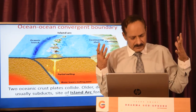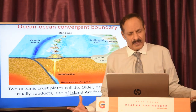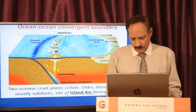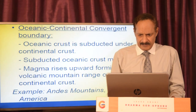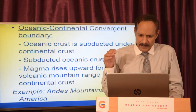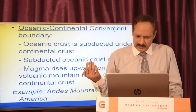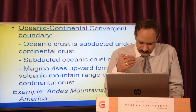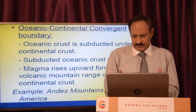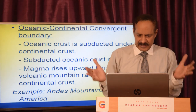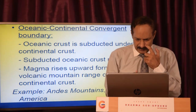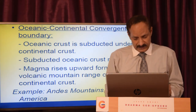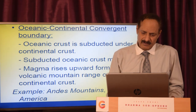At the ocean-ocean convergent boundary, the two oceanic crust plates collide; the older, denser plate usually subducts. When it subducts, the entire plate gets melted in high heat, and that melted material rises up like a volcano, forming a volcanic mountain. This can also occur at an ocean-continent convergent boundary, where the oceanic crust is subducted under the continental crust because the oceanic crust is heavier, and again magma rises upward forming a volcanic mountain range on the continental crust.